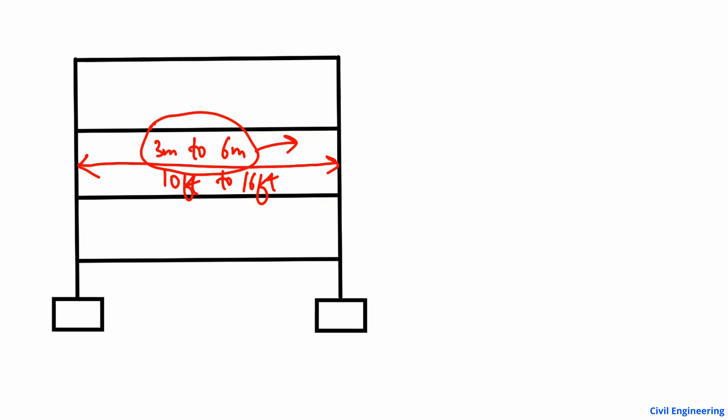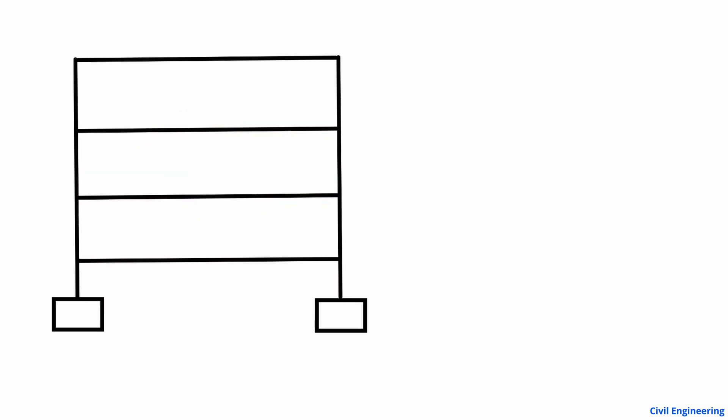For a three-story building, we define the ground floor, then the first floor, then the second floor, and then the third floor. We want to see the recommended column sizes and cross-sections for the columns in a residential building, starting with the ground floor.